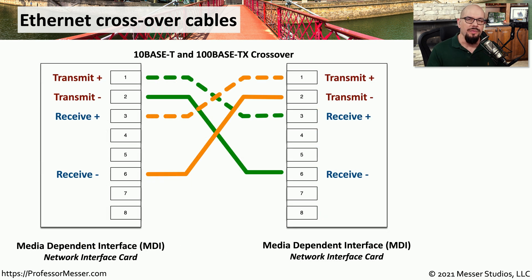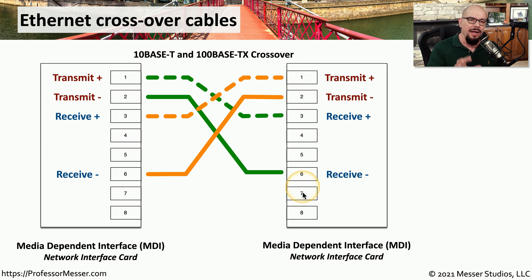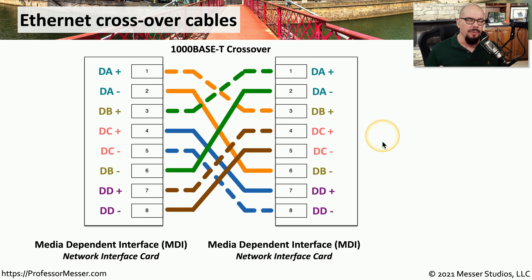This confusion about a crossover cable being 568A on one side and 568B on the other probably started when we only had two pairs of wires to worry about. With 10 and 100 megabit Ethernet, the wires on each side do have a similarity to A and B wiring — obviously not using pins 4, 5, 7, and 8. This definition falls apart with gigabit communication, because a 1000BASE-T crossover is clearly not 568A on one side and 568B on the other.